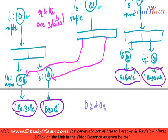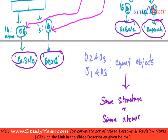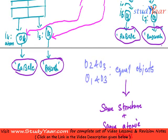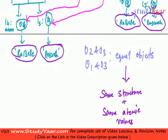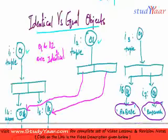O2 and O3, and O1 and O3, are equal objects. So equal objects have the same structure plus the same atomic values, while an identical object has the same structure and the same objects. That is the concept of identical and equal objects.